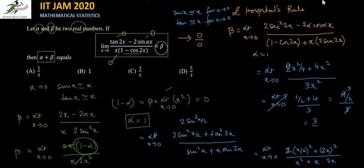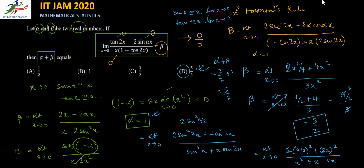So beta, which was the limit of the function as x tends to 0, comes out to be 3 by 2. We already found the value of alpha as 1. So alpha plus beta equals 1 plus 3 by 2, which equals 5 by 2. Option D is the correct answer.